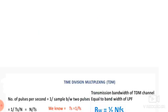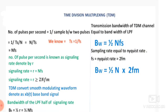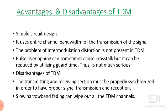The bandwidth in time division multiplexing is calculated as n·fs / 2. This means bandwidth can be saved and the signal can travel through a single channel.